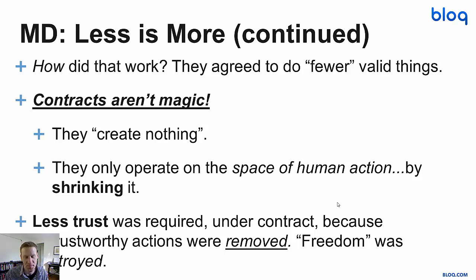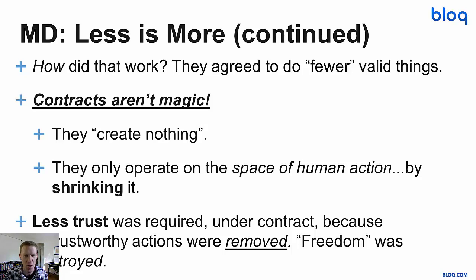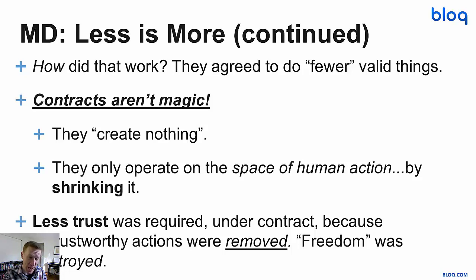The software developer wants the user to be able to do more things with their computer — that's the goal of software development. You want to say here's my software, it lets you order a car with your phone or whatever. The software developer wants the user to be able to do more things. The smart contract designer actually has the reverse goal: the smart contract designer wants the user's computer to be able to force the user to do fewer things. What the smart contract is is a limitation. It is not an increase.